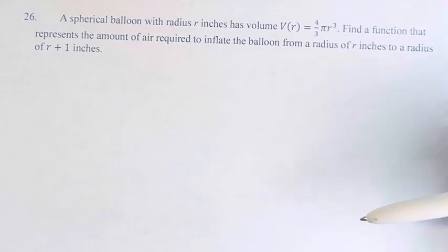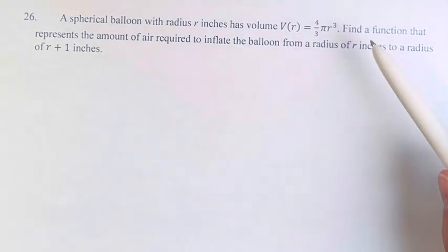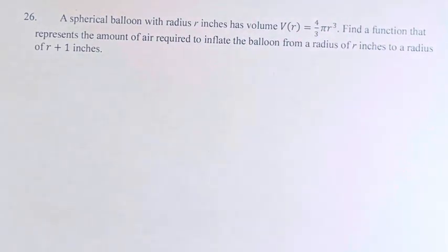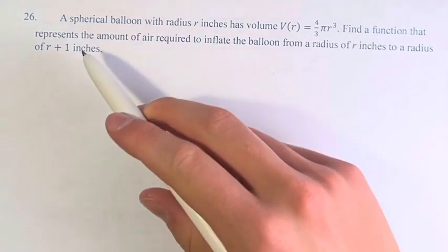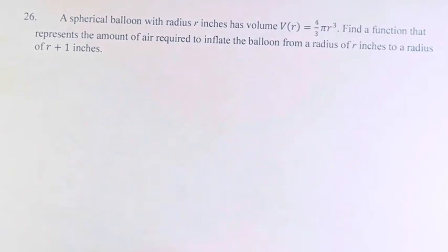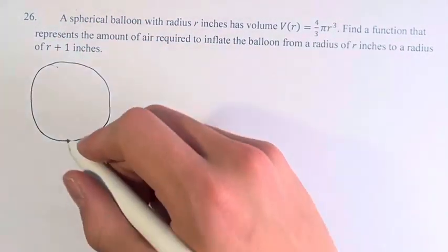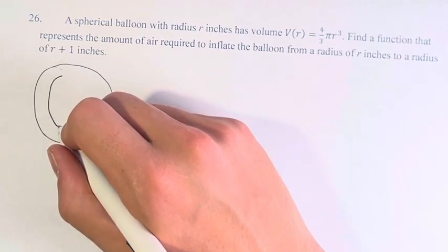So before coming up with a function, let's think about what does it actually mean to find the amount of air required to go from r inches to r plus 1 inches. Well, that means you take the total volume of the r plus 1 inches, and you subtract r inches.